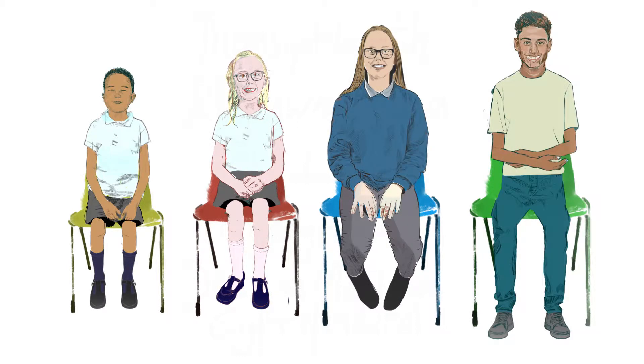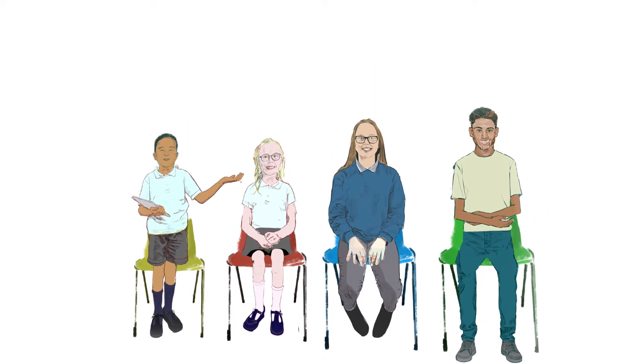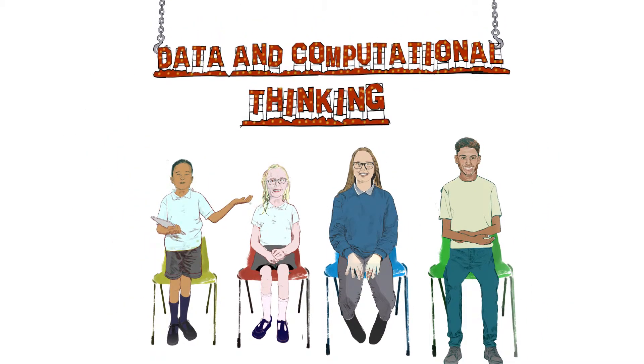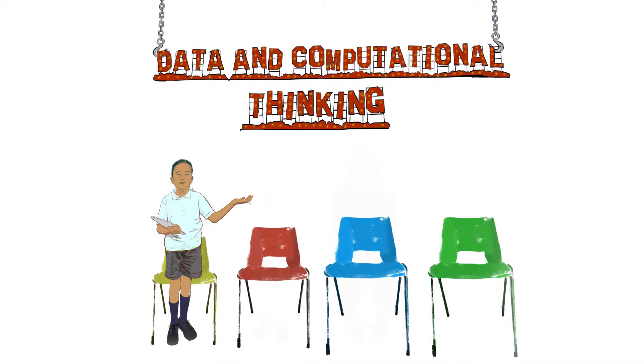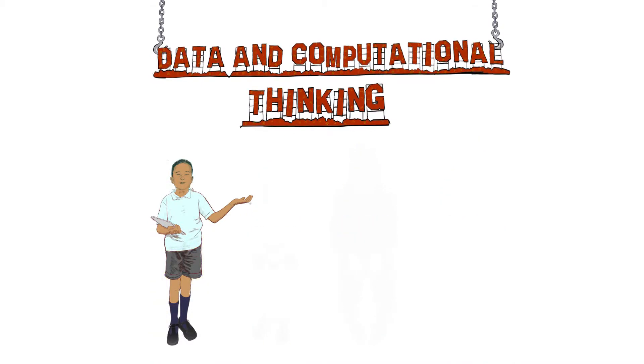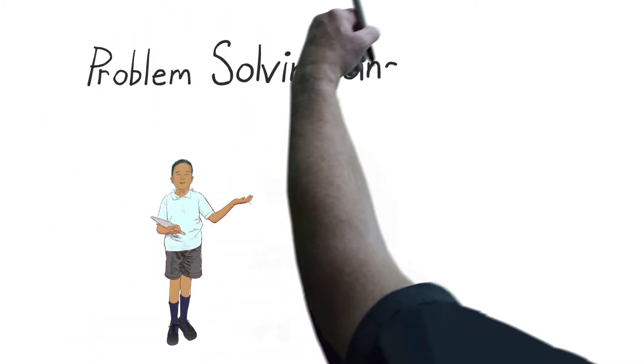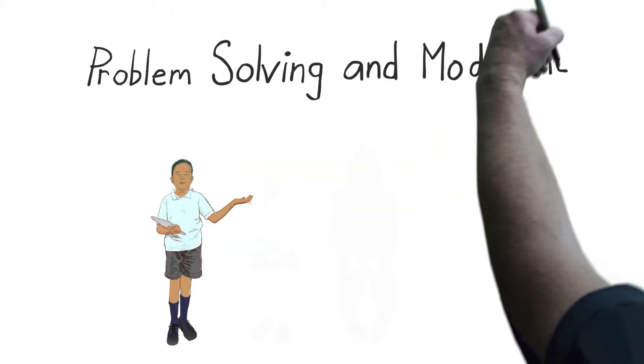Data and Computational Thinking's secret is in the title. It's the thought processes involved in solving a problem and expressing it so that a computer, person or machine can carry it out. There are just two elements. Let's see examples of what they mean in practice.